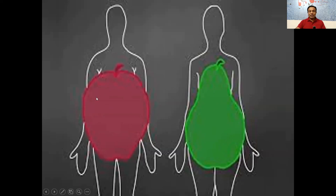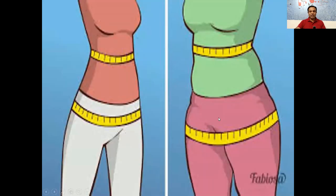Central obesity — fat around the waist — is quite bad for you. The simple and easy method to assess your physical health is to calculate the waist-to-hip ratio. You take a measuring tape, measure the waist circumference just above the umbilicus, then measure the hip circumference around the maximum area of the buttocks, and divide the waist circumference by the hip circumference.